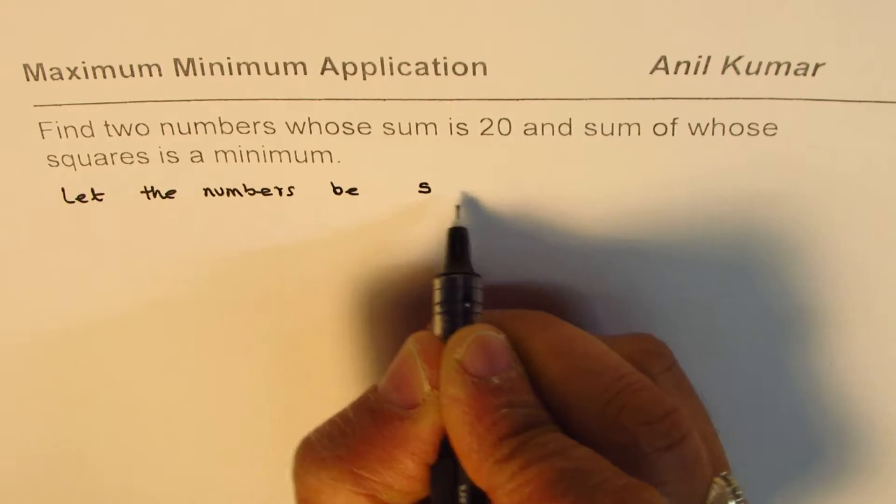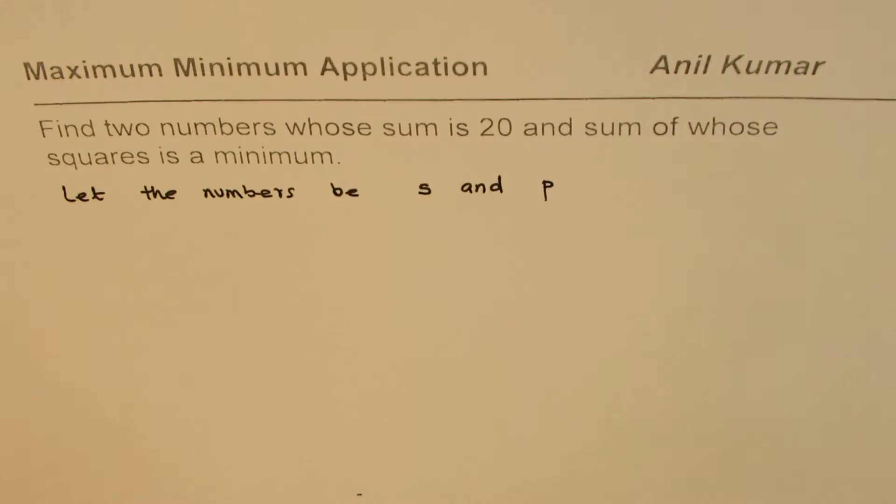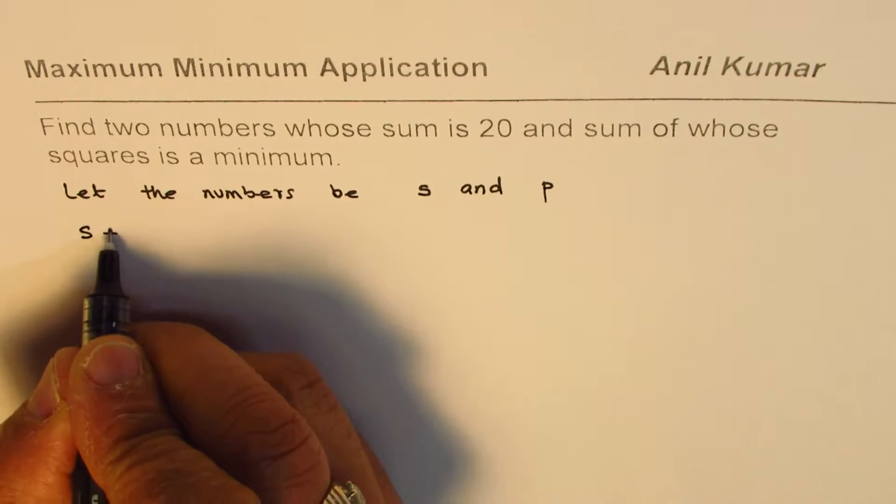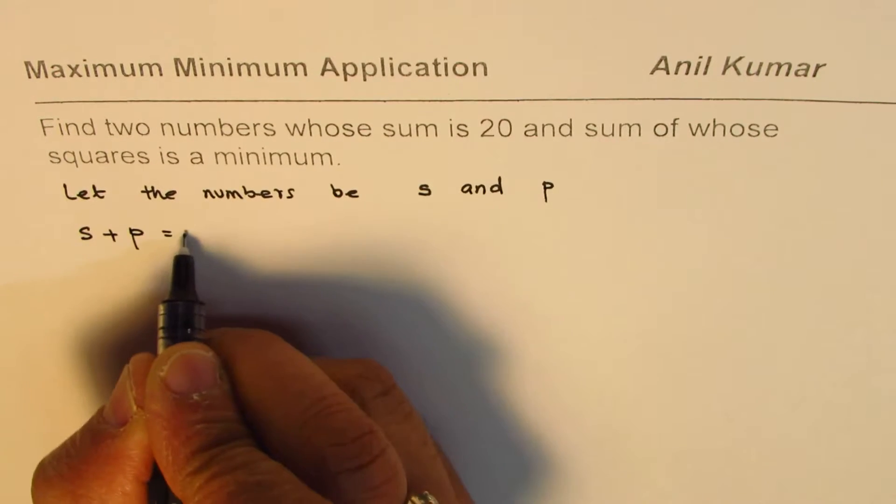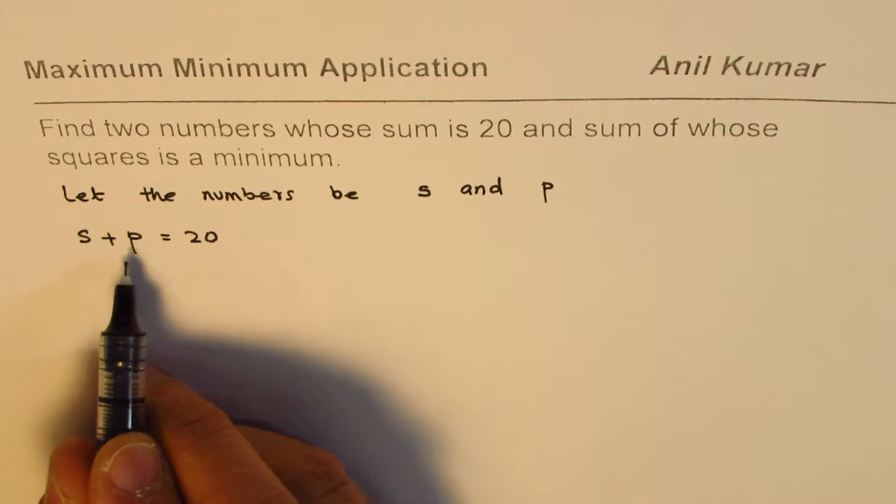So let us say, let the numbers be s and p. These are the two variables defined, and we know their sum is 20. That means s plus p equals 20.